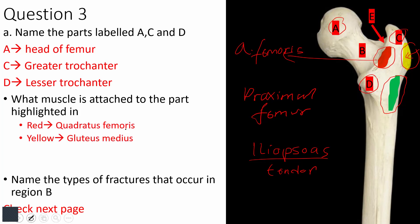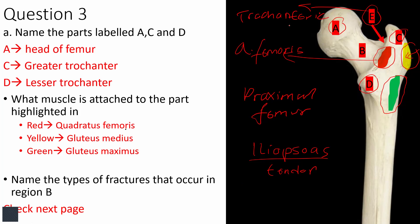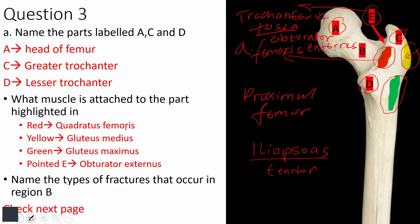Structure E is the trochanteric fossa, where obturator externus attaches — one of the six short lateral rotators of the hip joint. Now, regarding region B, which is the femoral neck: name the types of fractures that occur there. Femoral neck fractures are very important clinically because, if not managed, they present with avascular necrosis of the head of the femur.